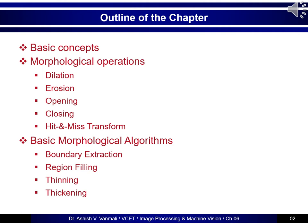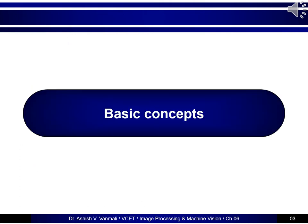There are many applications of morphological image processing and many algorithms that one can use. We will see some basic algorithms like boundary extraction, region filling, thinning, and thickening. There are many applications, so one can refer to any standard textbook to study the other algorithms. Now let's start with the basic concepts required for morphological image processing.